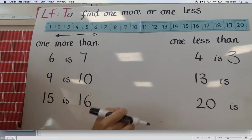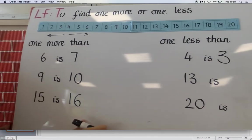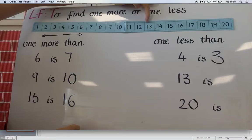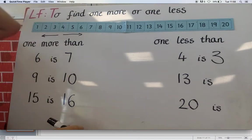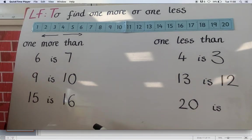And thirteen. One less than thirteen. Let's see. Let's find our thirteen over here. We're going to do our jump. Remember which way we're going. One less than thirteen is. Can you tell me one less than thirteen is? Twelve. One less than thirteen is twelve.